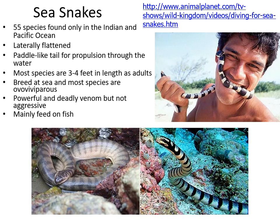Sea snakes — also called sea kraits — are pretty cool looking, but they are also super venomous. There are 55 species found in the Indian and Pacific Oceans, mostly in Southeast Asia. They have a flattened tail that acts like a flipper to help them swim. Most species are 3 to 4 feet in length as adults. Most are ovoviviparous, meaning they retain eggs inside their body, which develop into live birth. They are not very aggressive; even though they are very venomous — which helps them catch prey — they rarely bite anything other than their prey.